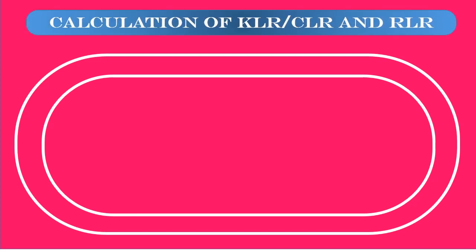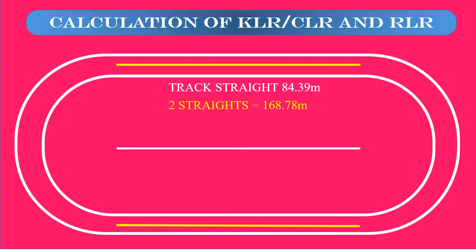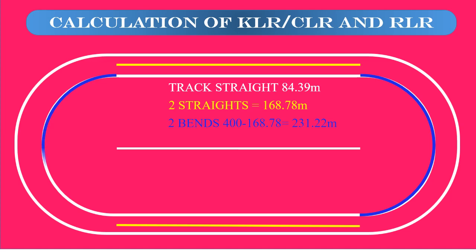This segment explains the calculation of Curb Line Radius (KLR) and Running Line Radius (RLR). The 400 meter standard track stride is 84.39 meters. Two strides are 168.78 meters. To find out the two bends distance, we have to subtract the stride distance from 400 meters. The two bends distance is 231.22 meters.